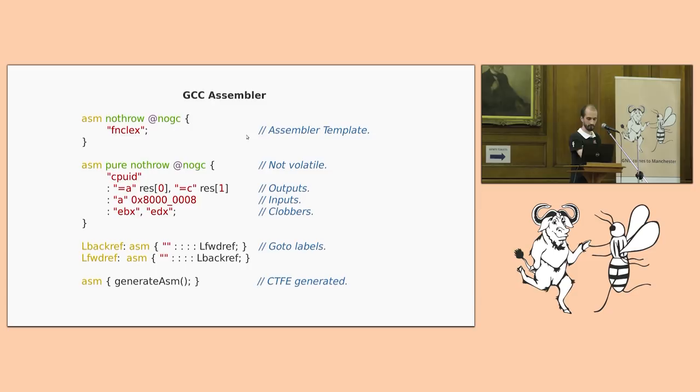So, how the asm parser works. Asm statements are volatile unless you pass the pure attribute. Output operands, they are semantically checked to make sure that they are valid L values. Inputs must be valid R values. Jumps, they are checked to make sure that they don't break language rules, such as skipping initialization. And because we're using the front-end semantic analyzer, we also get CTFE capabilities. So, you can just generate assembler from functions that return strings.